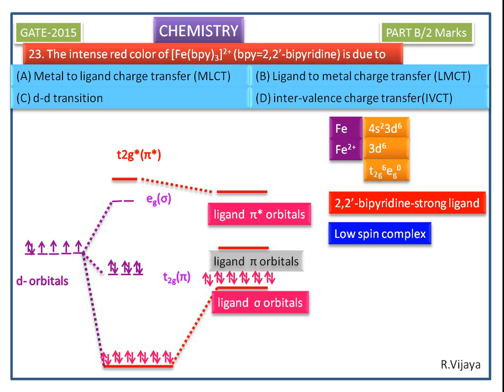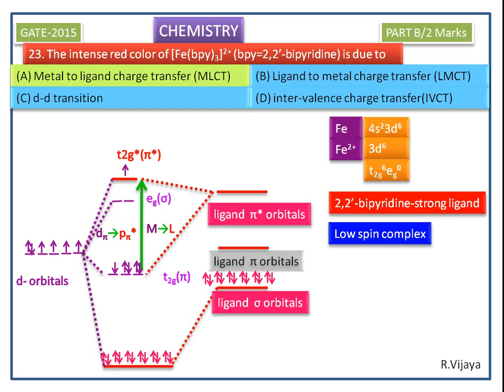This is a pi to pi star orbital transition, because the ligand orbitals have low-lying empty pi star orbitals. This type of transition is known as metal-to-ligand charge transfer (MLCT) transition, or d-pi to pi star transition. So the correct answer is metal-to-ligand charge transfer transition.